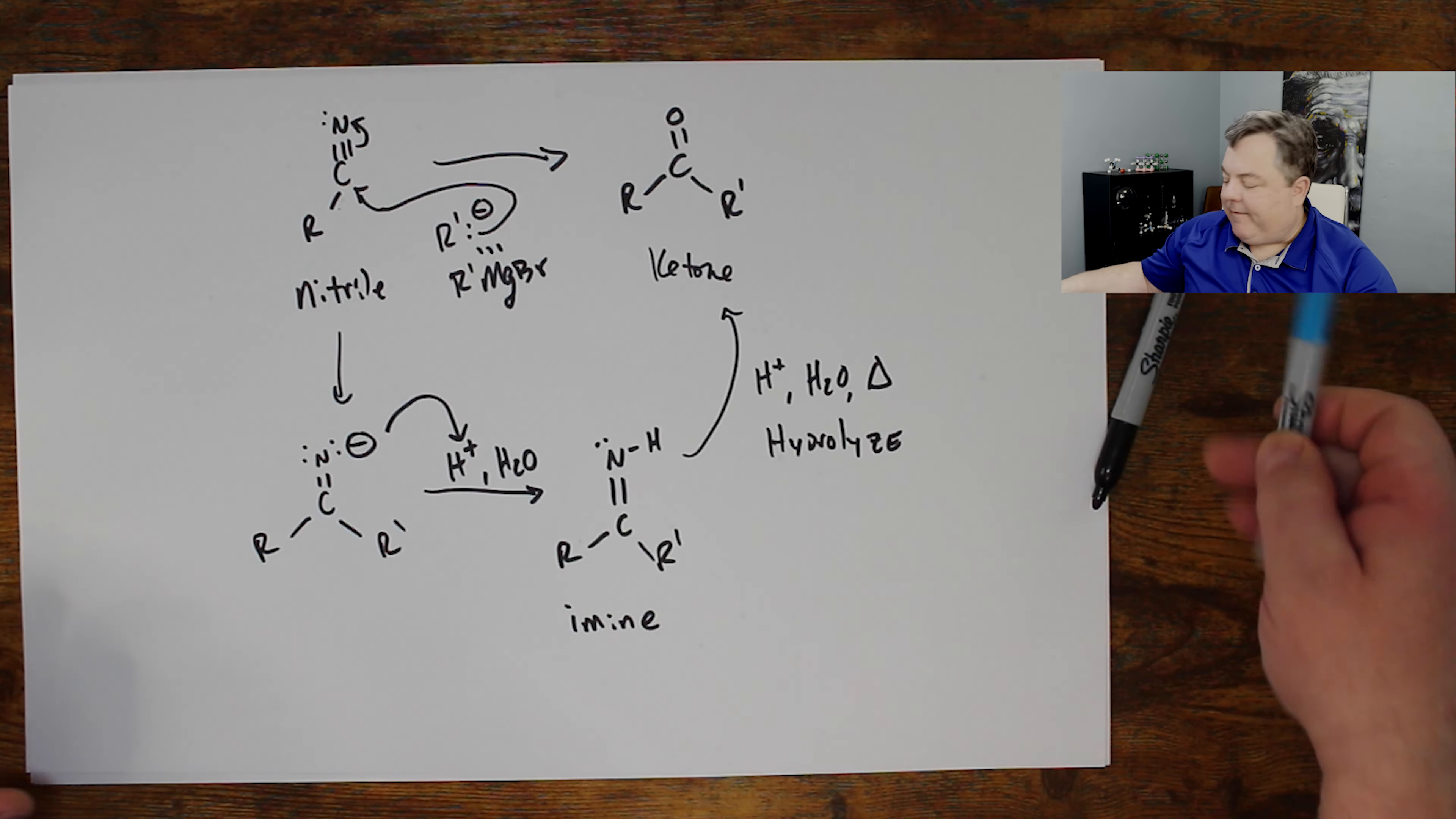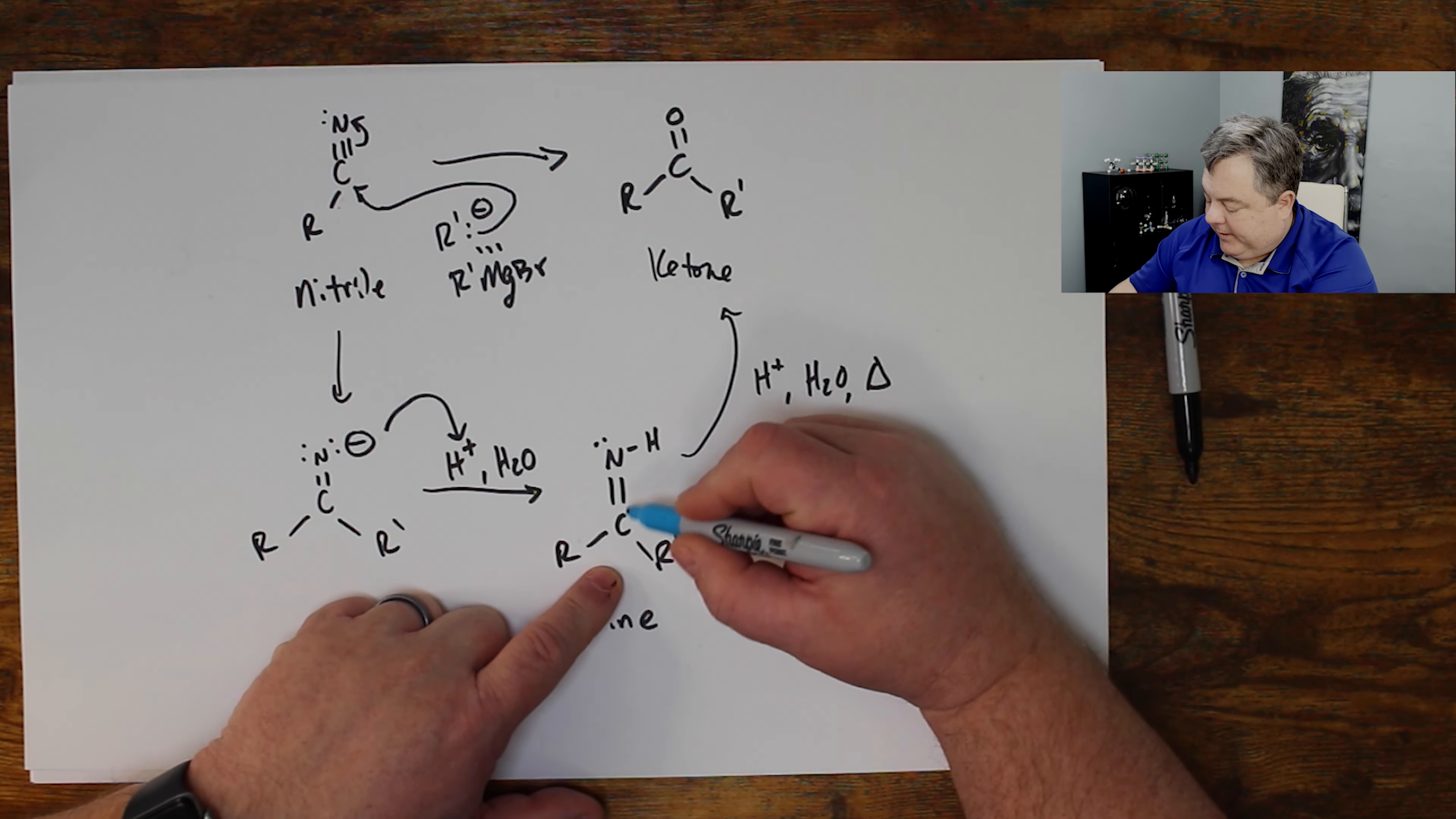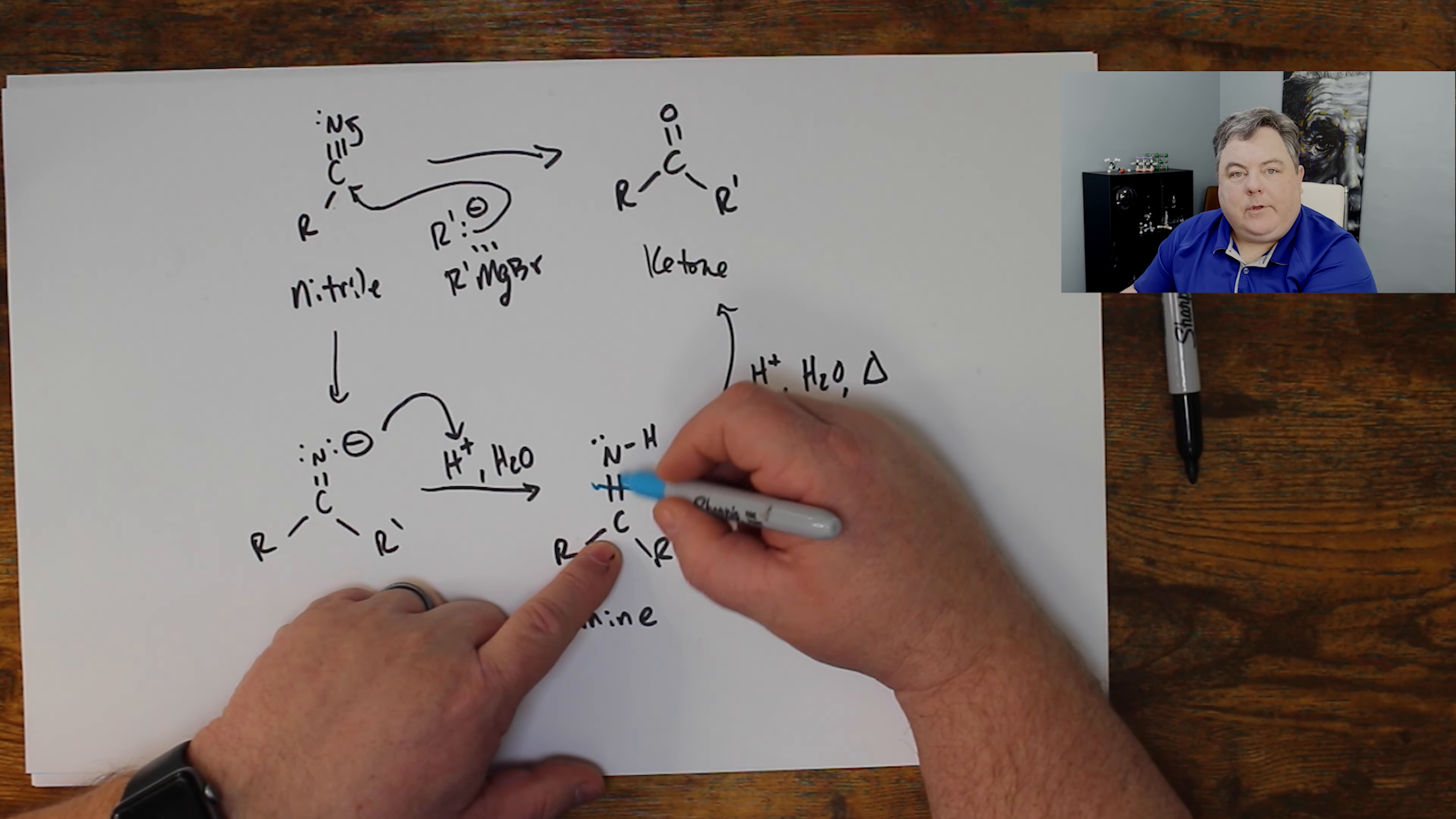And I may show you that mechanism in another video. You'd be able to figure it out or understand it. But what I want you to focus on right now is this carbon double bond nitrogen becomes a carbon double bond oxygen. You chop two bonds to the nitrogen, carbon double bond nitrogen, and you add the oxygen from the water.